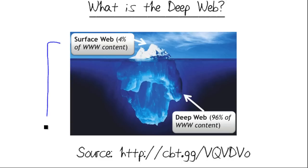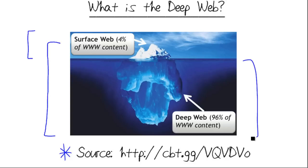You can see different numbers cited. This particular graphic — the source is provided on screen — says that approximately 4% of the entire content of World Wide Web resources are visible on the so-called surface of the web, meaning reachable through a web browser and a search engine. Like an iceberg in the ocean, the unindexed portion of the web constitutes the vast majority of content.